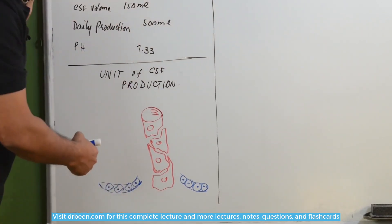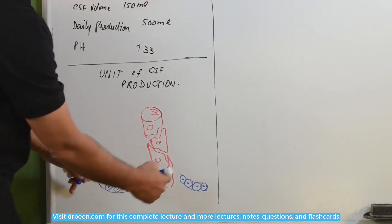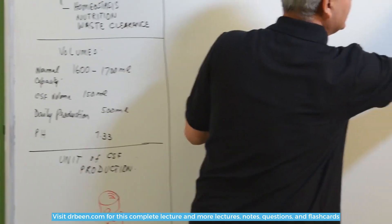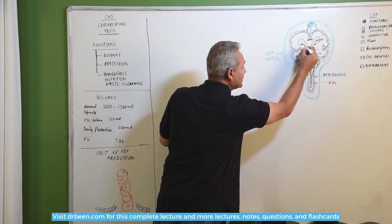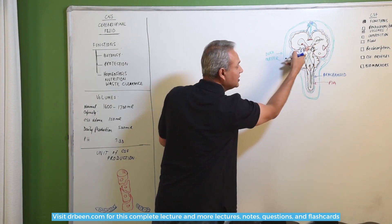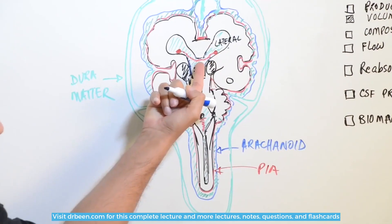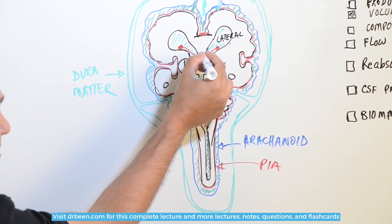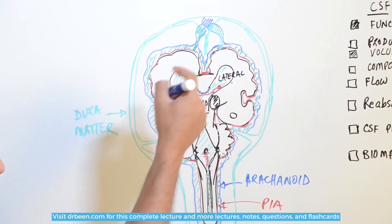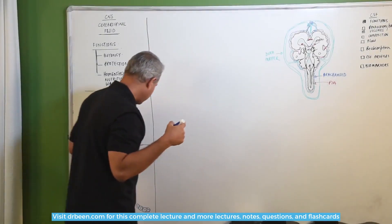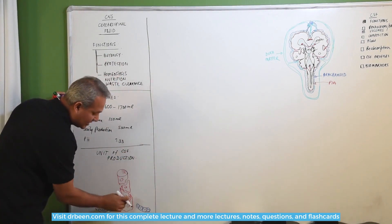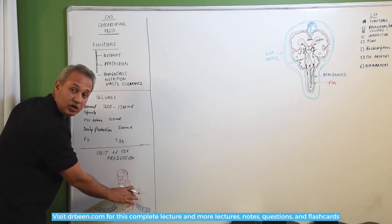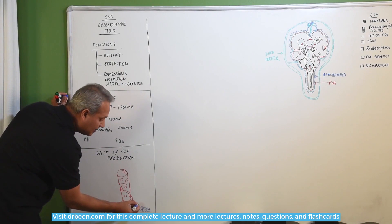These are the normal ependymal cells. What are these cells? These are the cells that are lining these cavities. You can focus here on this capillary and the ependymal cells in this area. That is what we are talking about. Ependymal cells, when they come in contact with the capillary, they become cuboidal.